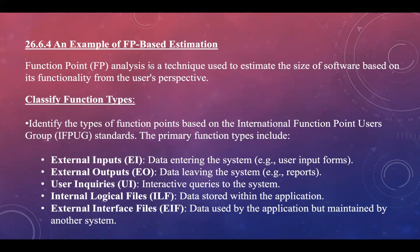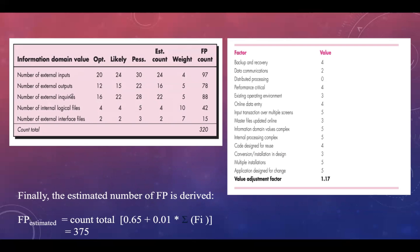Moving on to FP-based estimation. Function point analysis is a technique used to estimate the size of software based on functionality from the user's perspective. We classify function types such as external inputs, external outputs, user inquiries, internal logical files, and external interface files. Values are assigned to each parameter, and assuming the final calculated value is 320 function points after applying the 14 complexity adjustment factors, we use the standard count-total formula for function point estimation.